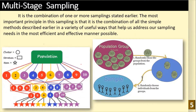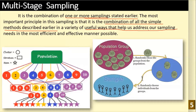This is multi-stage sampling. It is the combination of one or more sampling techniques stated earlier — a combination of previous probability sampling methods. The important principle here is that combining all the simple sampling methods described earlier is useful and will help you address your sampling needs in the most efficient and effective manner possible.